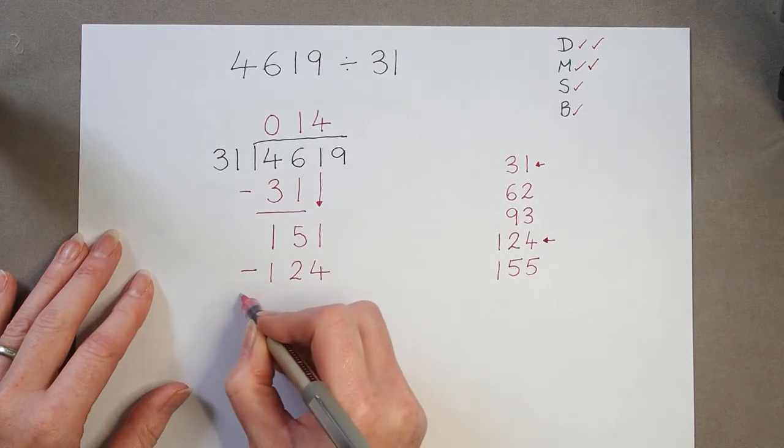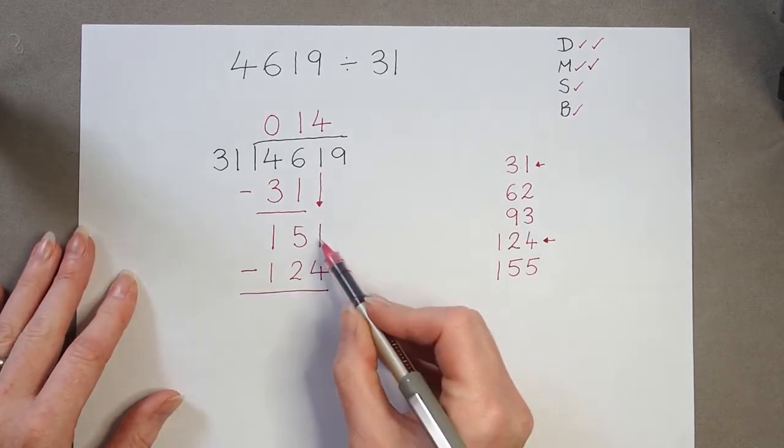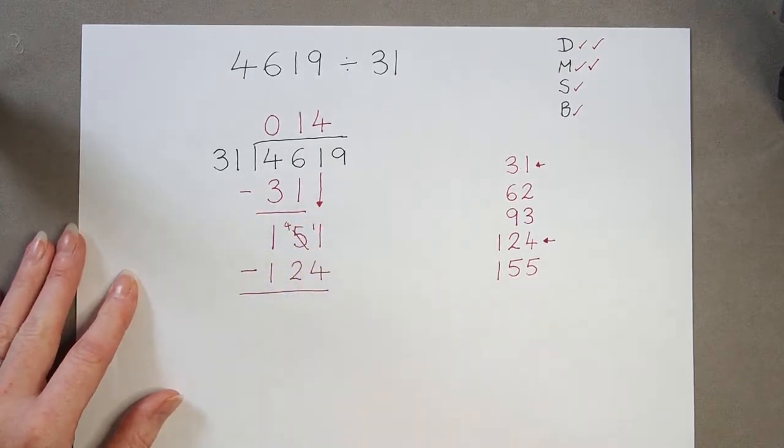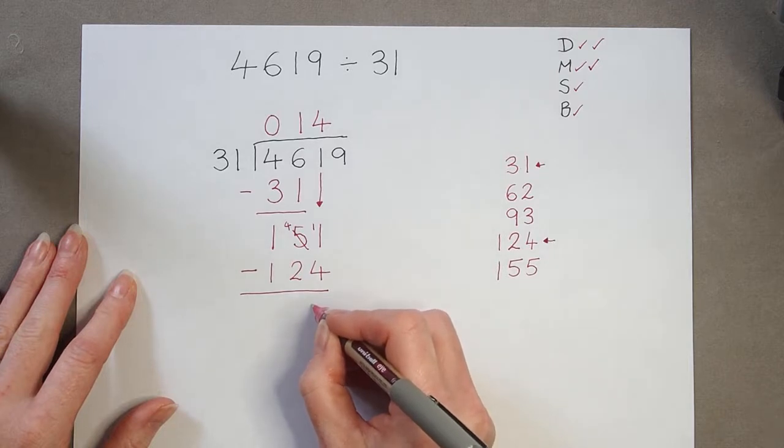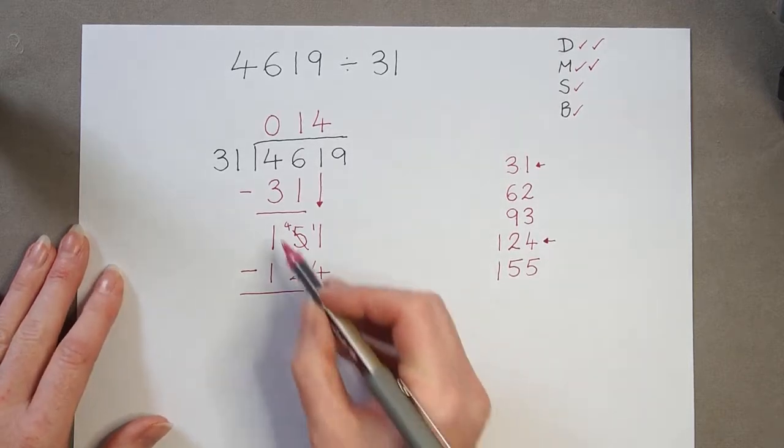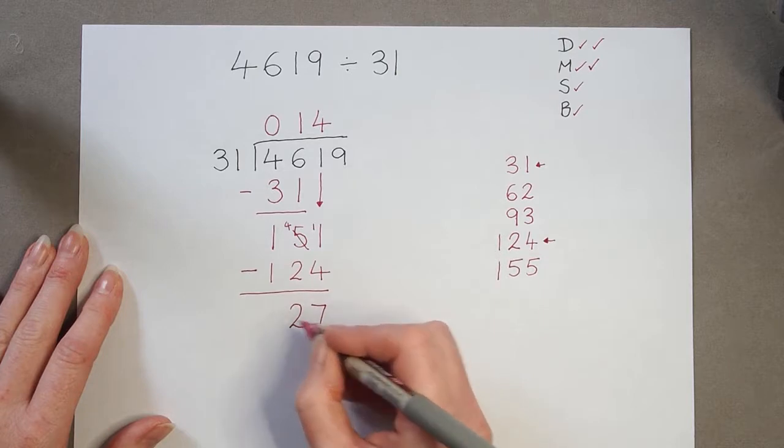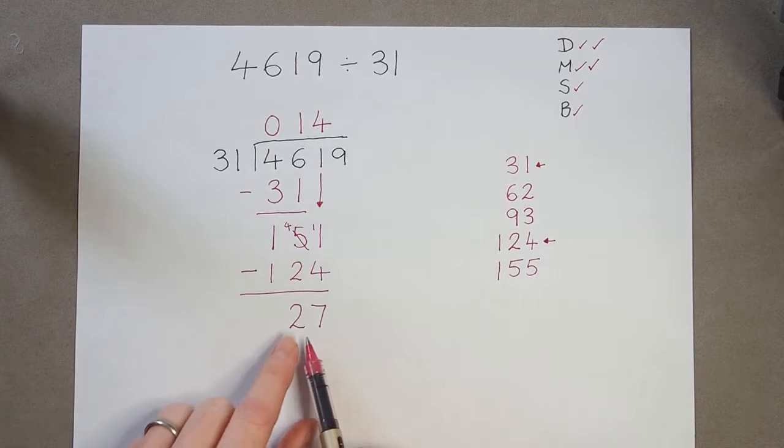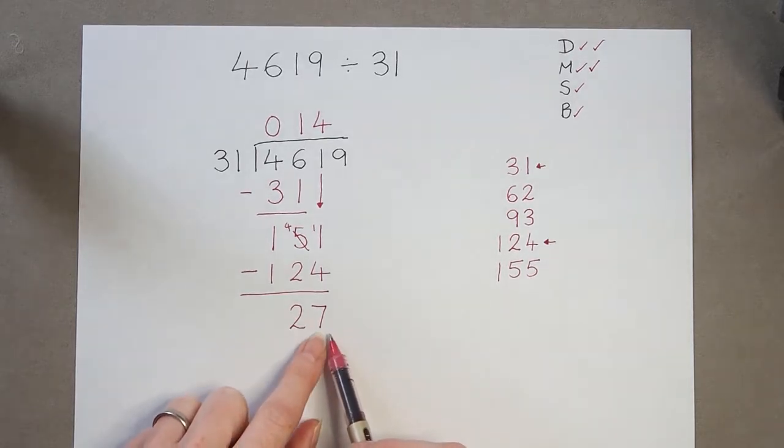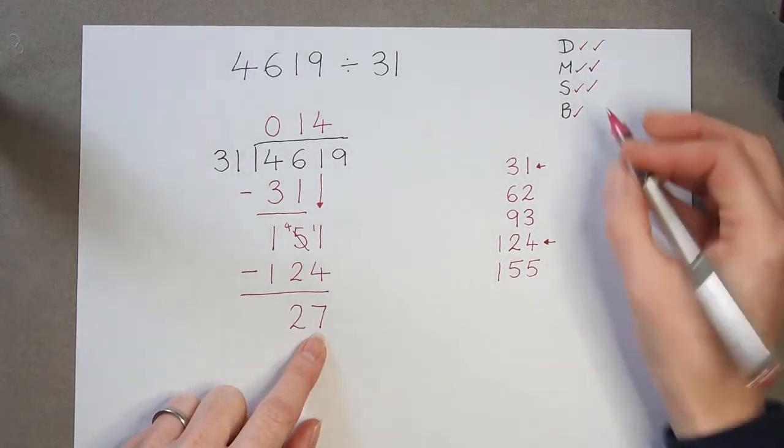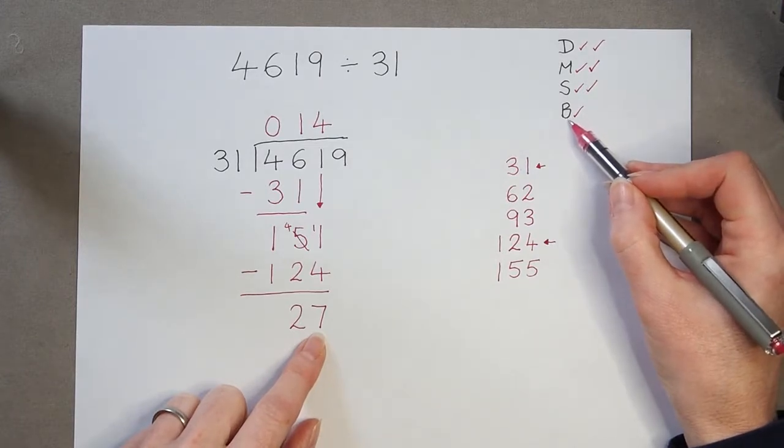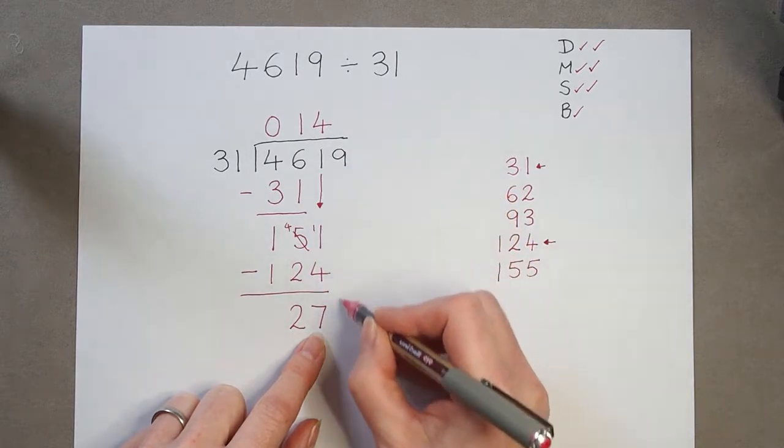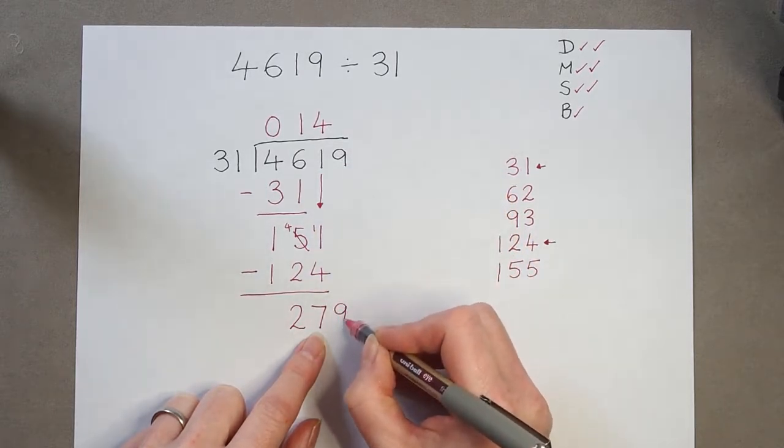And I do the subtraction. 1 subtract 4, so just as in normal column subtraction, I can exchange that 10. 11 subtract 4 is 7, 4 subtract 2 is 2, and 1 subtract 1 is 0. I'm not going to write the 0 in; I know it's 0, I don't want to confuse myself. So now I've done the subtraction. If I'm stuck, I look at this and see the B, bring down, so I'm going to bring this 9 all the way down to here.